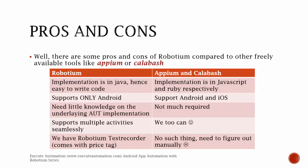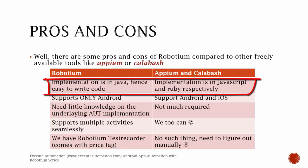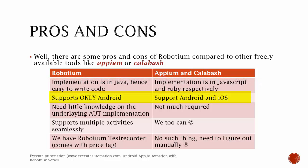Compared to other freely available tools like Appium or Calabash, Robotium's implementation is in Java, making it easy to write code, whereas Appium and Calabash are written in JavaScript and Ruby respectively. Robotium supports only Android applications, whereas Appium and Calabash support both Android and iOS. Robotium requires a little knowledge of the underlying application under test, whereas Appium does not require as much. Robotium supports multiple activities seamlessly, and so do Appium and Calabash.